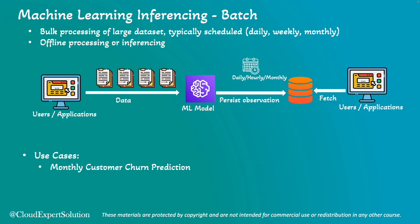In terms of use cases, a telecom company might want to predict which customers are likely to leave at the end of the month, or forecast monthly churn rate. A retail company might want to forecast sales for the upcoming month. If you need predictions on a monthly, weekly, or daily schedule, batch is the perfect approach. Also, if you have a huge dataset and are not latency sensitive, batch is your ideal use case.